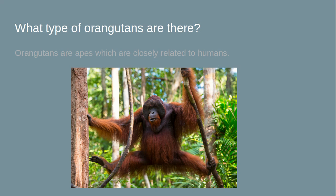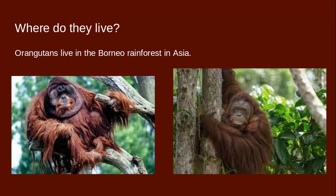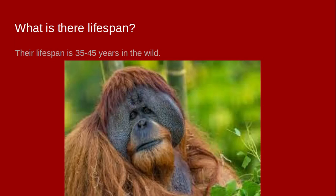We can find orangutans in the Borneo rainforest in Asia — on the eastern side of Asia. Now, what is an orangutan's lifespan? Their lifespan is 35 to 45 years in the wild.